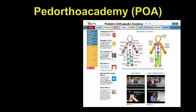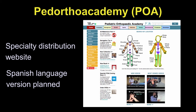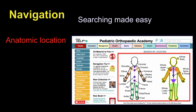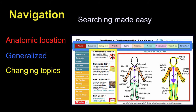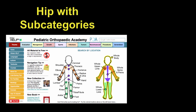The Pediatric Orthopedic Academy, or POA, is a website that will be duplicated in Spanish, hopefully in the next year. It's designed to make navigation easy. We have a lot of topics, so you can go to the anatomic location as a first choice. If it's not there or it's generalized, you go to the top bar. Or if there are changing topics, you go to the yellow as shown and click on one topic of interest, or go to the left side for special searches.